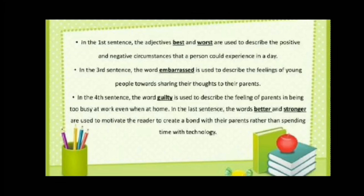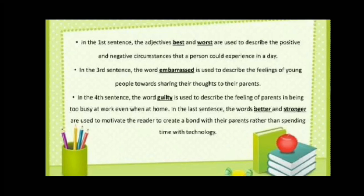In the first sentence, the adjectives best and worst are used to describe the positive and negative circumstances a person could experience in a day. In the third sentence, the word embarrassed describes the feeling of young people towards sharing their thoughts with their parents. In the fourth sentence, the word guilty describes the feeling of parents in being too busy at work even when at home. In the last sentence, the words better and stronger are used to motivate readers to create a bond with their parents rather than spending time with technology.